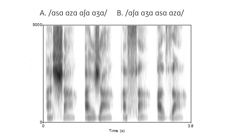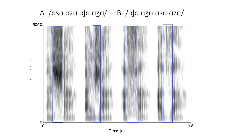Here we have four fricative consonants sandwiched by A vowels — S and Z followed by SH and ZH, or the reverse with SH and ZH first followed by S and Z. If we look at the fricative portion and the concentration of noise energy, the first two productions have a mid-frequency noise peak that is not visible in the second two productions.